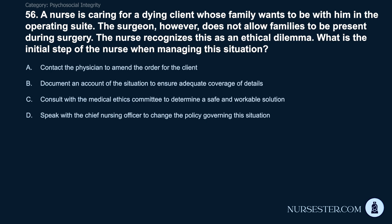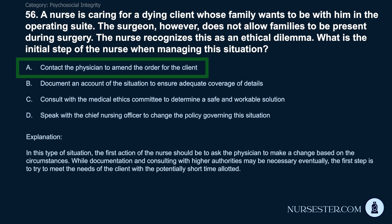Question 56: A nurse is caring for a dying client whose family wants to be present in the operating suite, but the surgeon does not allow families during surgery. The nurse recognizes this as an ethical dilemma. What is the initial step? A) Contact the physician to amend the order. B) Document an account of the situation. C) Consult with the medical ethics committee. D) Speak with the chief nursing officer to change the policy. Correct answer: A. Contact the physician to amend the order for the client. The first action should be to ask the physician to make a change based on the circumstances, as the first step is to try to meet the client's needs within the potentially short time available.